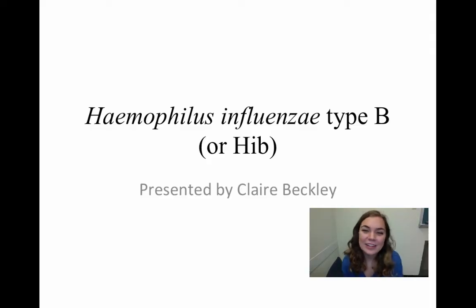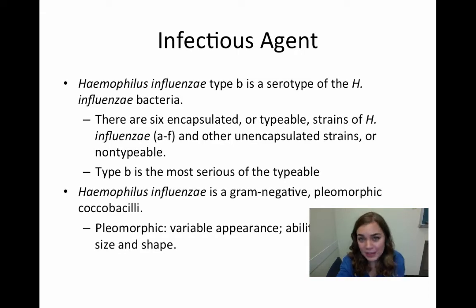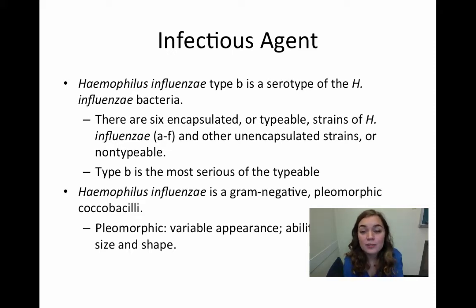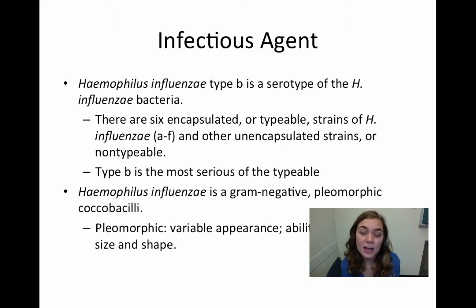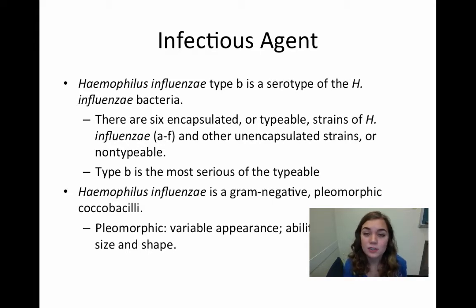Hey everyone, I'm Claire Beckley and I'm going to be talking about Haemophilus influenzae type B, or Hib. Hib is one serotype of H. influenzae bacteria. There are six identifiable typeable encapsulated strains of Haemophilus influenzae and there are other unencapsulated non-typeable strains. Type B is the most serious of the typeable strains because it causes the most serious diseases and has the highest mortality rate.